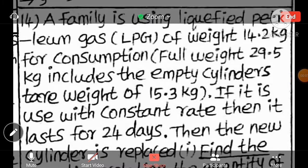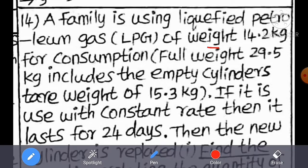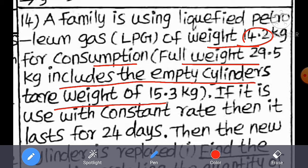Exercise 6.2, level 14th problem. A family is using liquefied petroleum gas, LPG. The gas used has weight 14.2 kg for consumption. Full weight is 29.5 kg, which includes the empty cylinder's tare weight of 15.3 kg. The cylinder full weight is 29.5 kg and the empty cylinder weight is 15.3 kg.